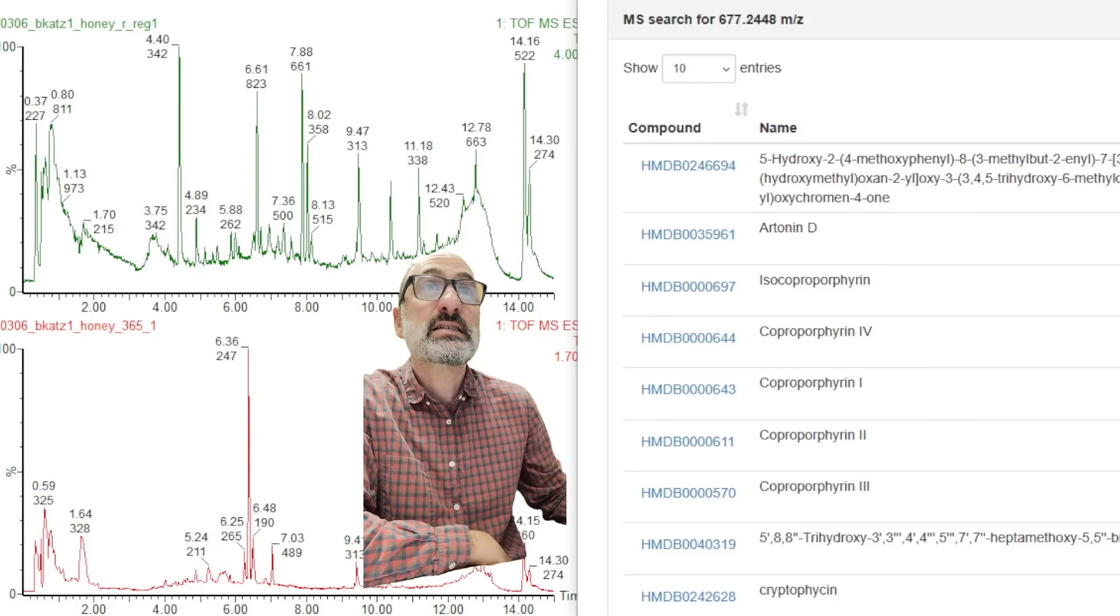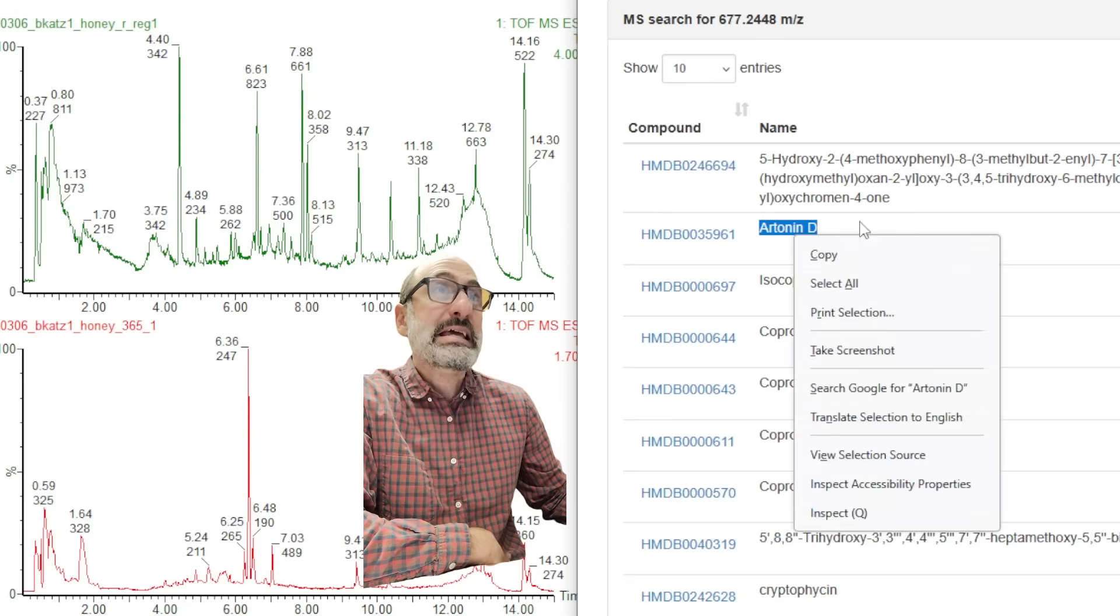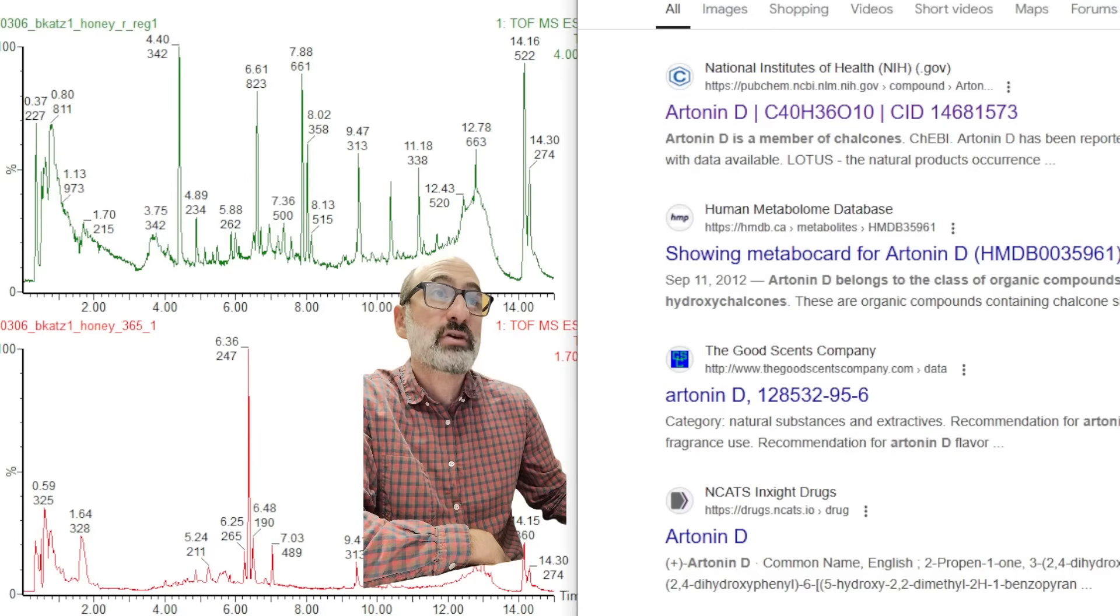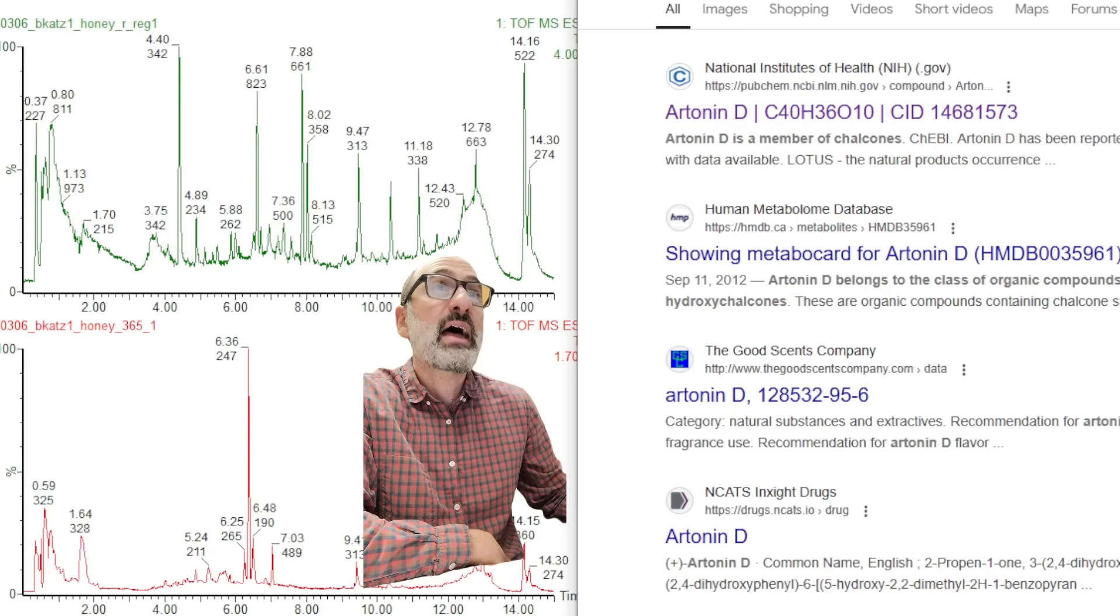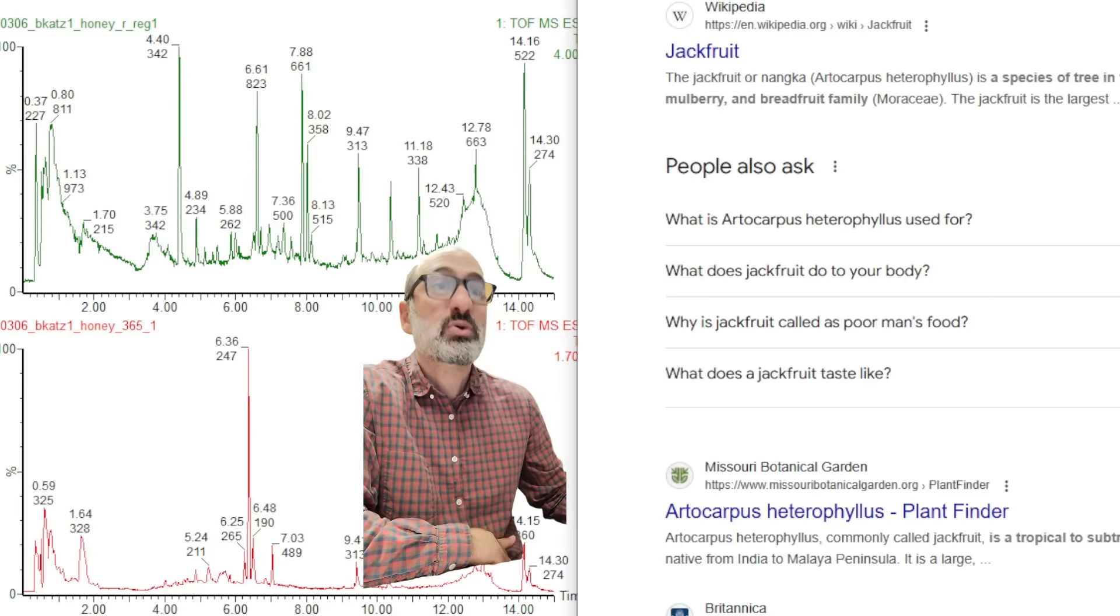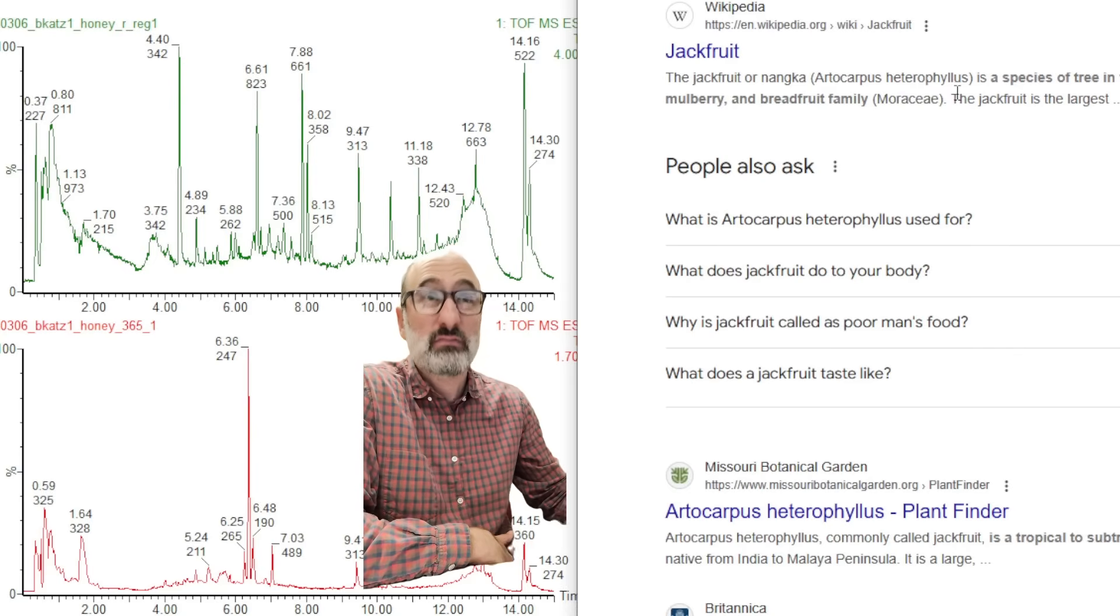All right, so next peak, 677. The only thing I'm seeing that makes sense with this is R-tonin-D, which is natural substances and extractives. Looks like it's coming from this plant here. That is jackfruit. So, I guess some sort of jackfruit extract. I don't know if that even makes sense.